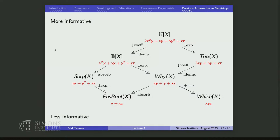Alternatively, instead of dropping exponents you drop the coefficients — for example, 2X² becomes X²Y + XY + Y² + XZ. That is the same as quotienting by idempotence. From the boolean polynomials, if you drop exponents again you get the Y-provenance of Tan, Buneman, and Khanna. You can also drop coefficients from TRIO provenance and get Y-provenance too, and this commutes.